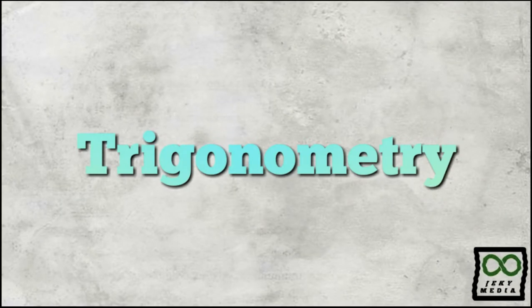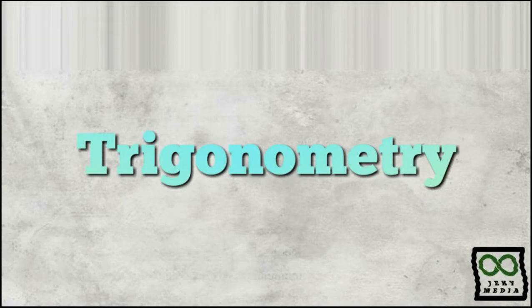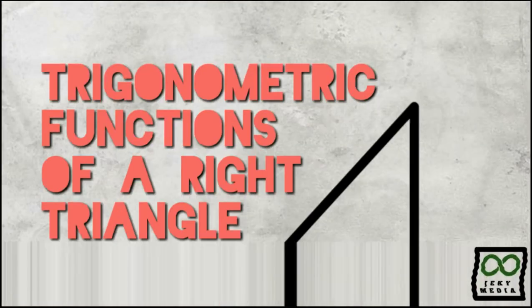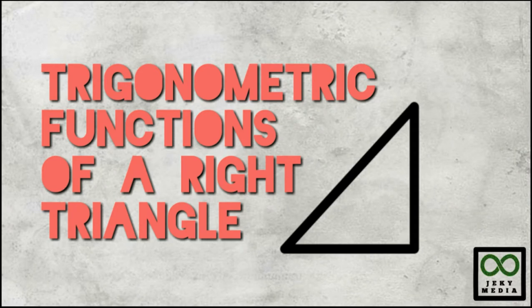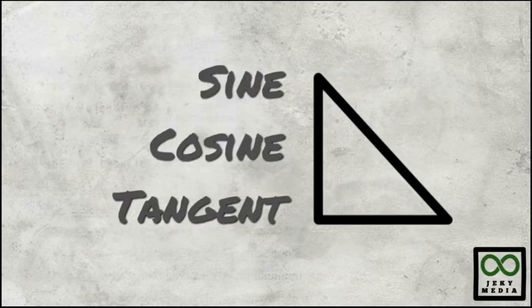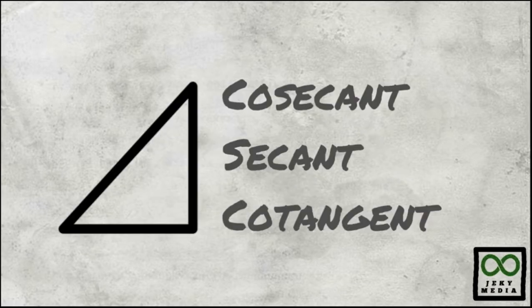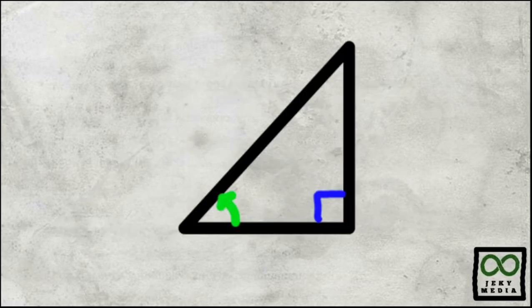Today's video is about a topic in trigonometry: the trigonometric functions of a right triangle. We have six trigonometric functions, including sine, cosine, tangent, cosecant, secant, and cotangent.